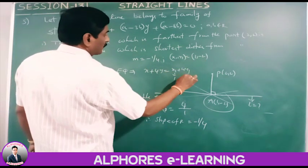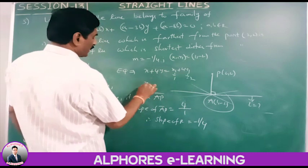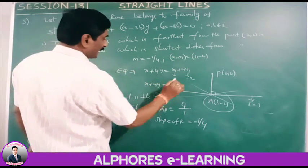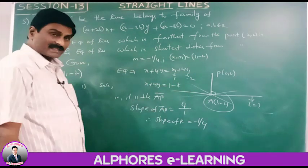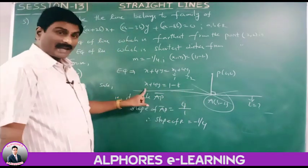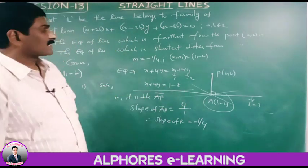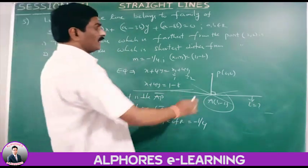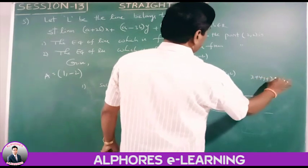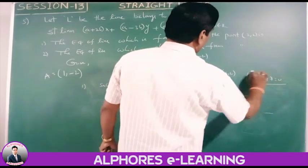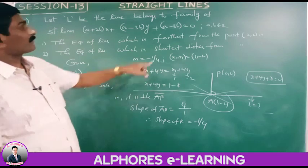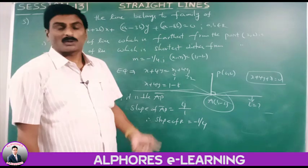Therefore the final answer for sub-problem 1 is x plus 4y plus 7 equals 0. This is the equation of the line which is farthest from the point (2, 2). Very important result.